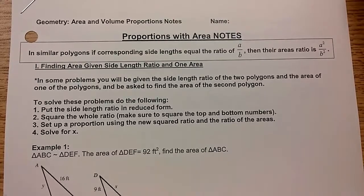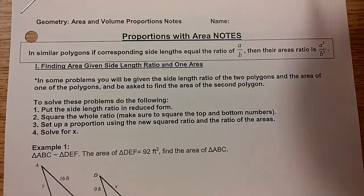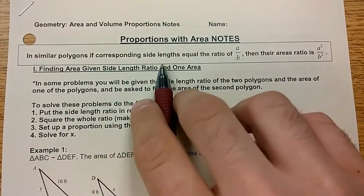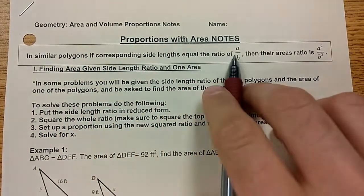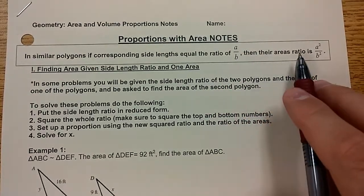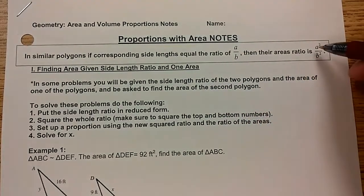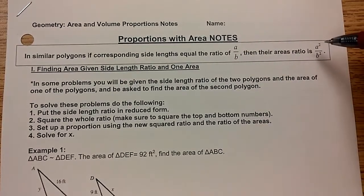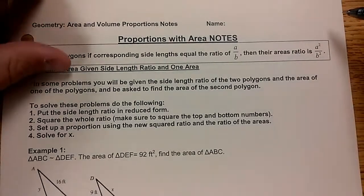In this video, we're going to learn how to find missing sides and missing areas when you're given two similar figures. The rule is, in similar polygons, if corresponding side lengths are equal to the ratio A over B, then the ratios of their area are A squared over B squared. Essentially, you take your ratio side length and you square it, and you get the ratio of the areas.